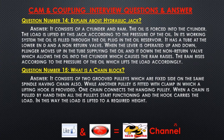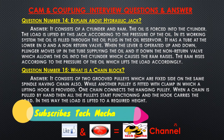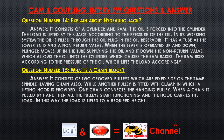Question number fourteen: Explain about a hydraulic jack. Answer: It consists of a cylinder and ram. The oil is forced into the cylinder and the load is lifted according to the pressure of the oil. In its working system, the oil is filled through the oil plug in the oil reservoir. It has a tube at the lower end and a non-return valve. When the lever is operated up and down, the plunger moves up in the tube supplying the oil, and on the down stroke the non-return valve allows oil into the cylinder which causes the ram to rise. The ram rises according to the pressure of the oil, which lifts the load accordingly.